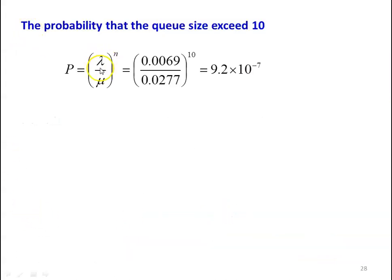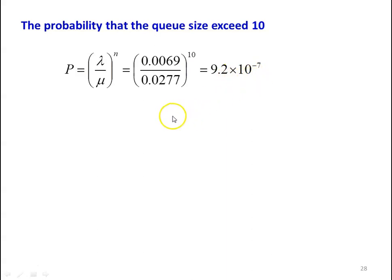The probability that queue size exceeds 10: P equals (lambda divided by mu) to the power n, which is (0.0069 divided by 0.0277) to the power 10 equals 9.2 times 10 to the power minus 7. The probability is very, very low for the queue size to exceed 10.